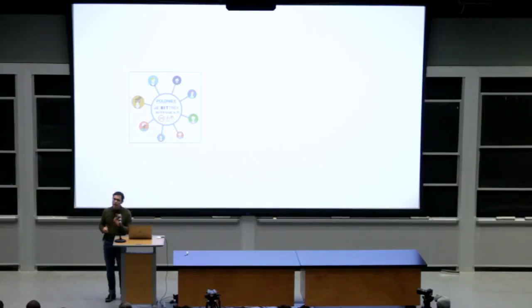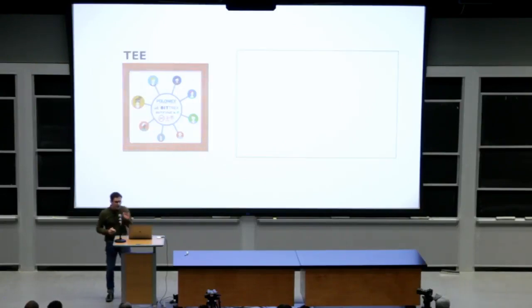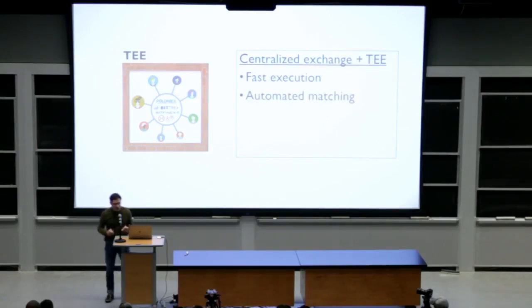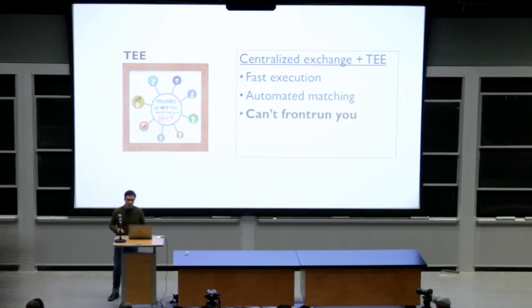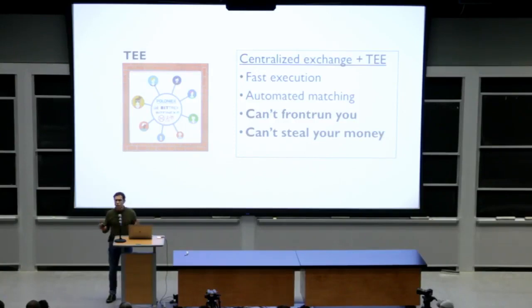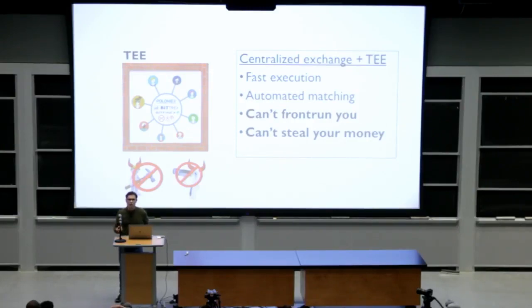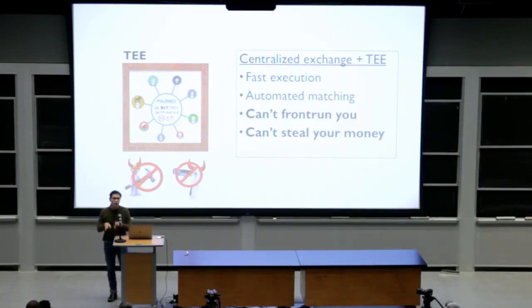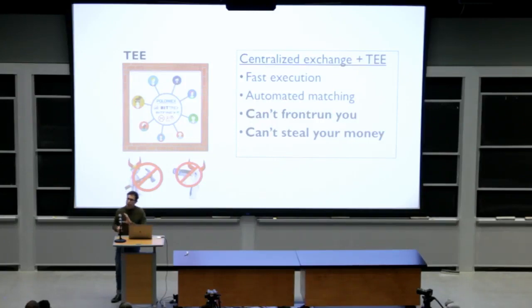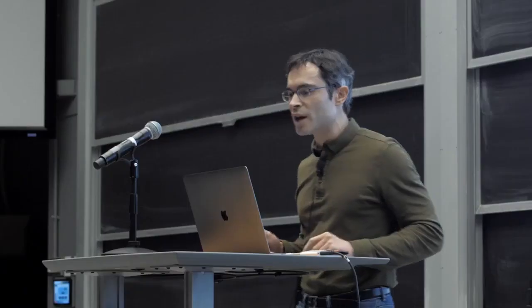Imagine what would happen if we took a centralized exchange and ran it in a trusted execution environment. We could get the best of both worlds: fast execution and automated matching that typifies centralized exchanges, while also solving the problems of centralized exchanges — the exchange could no longer front-run you and couldn't steal your money. The integrity and confidentiality guarantees ensure the operator can't tamper with or see transactions, and can't see users' private keys in order to steal funds. We've realized such a TEE-backed exchange in a system called Tesseract, which we're now in the process of commercializing.